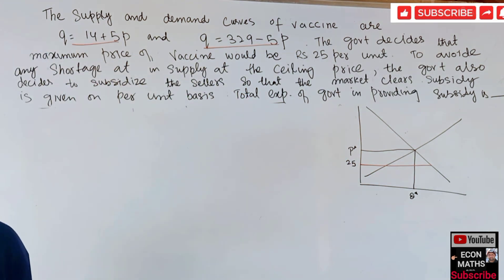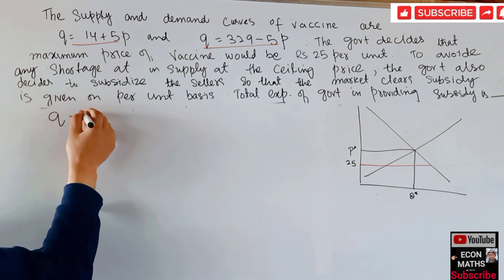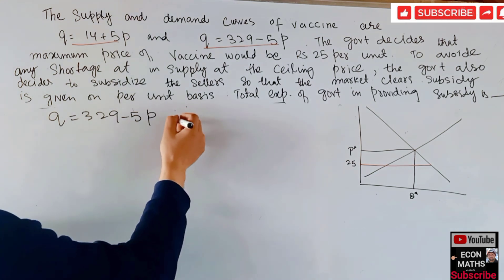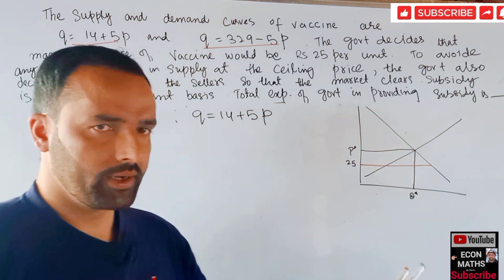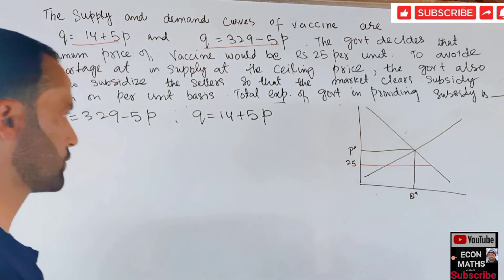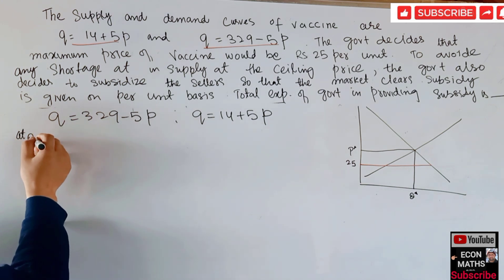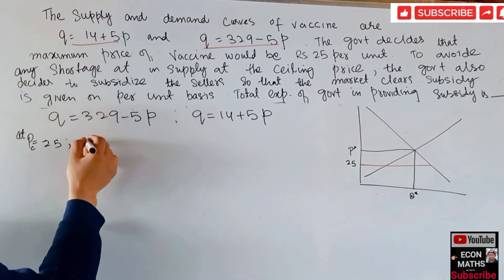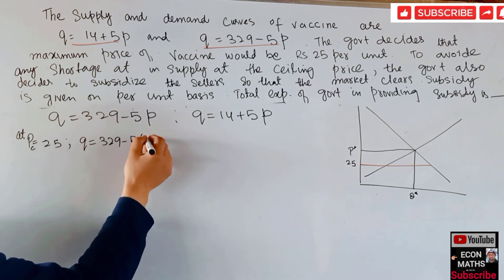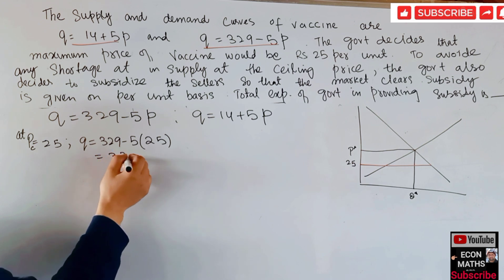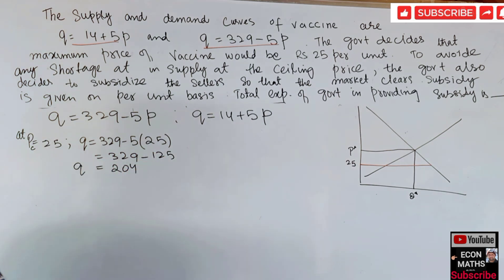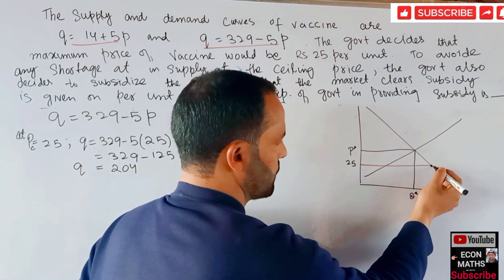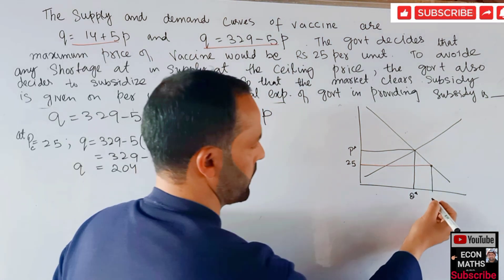We write our demand function: Q = 329 - 5P, and our supply function: Q = 14 + 5P. At the price ceiling of P = 25, the quantity demanded is Q = 329 - 5(25) = 329 - 125. This gives us 204. So the quantity demanded at the price ceiling of ₹25 is 204 units.